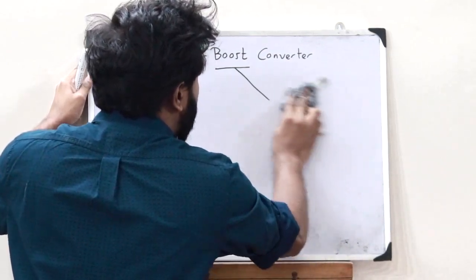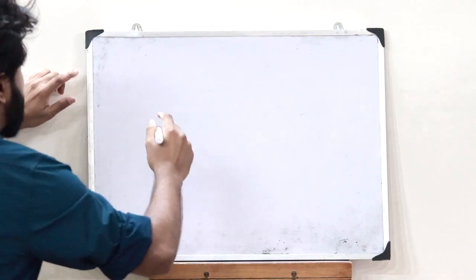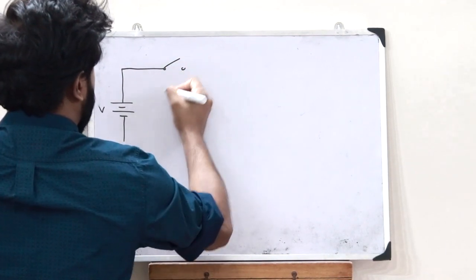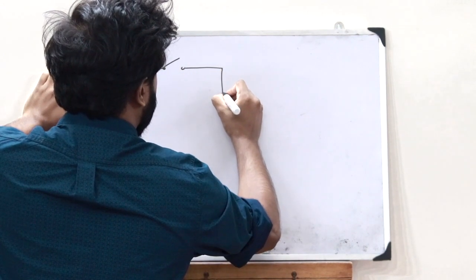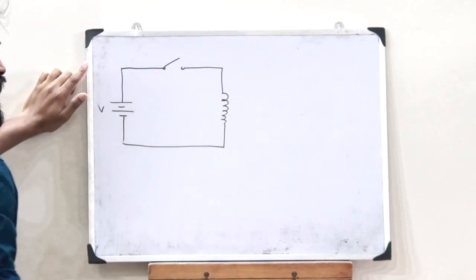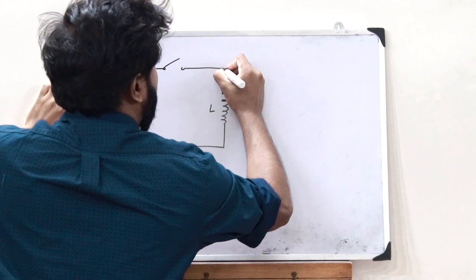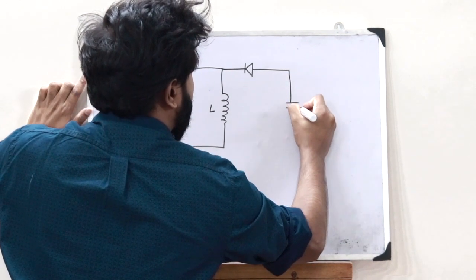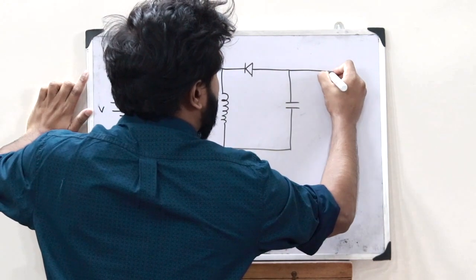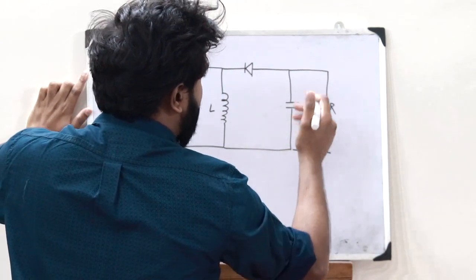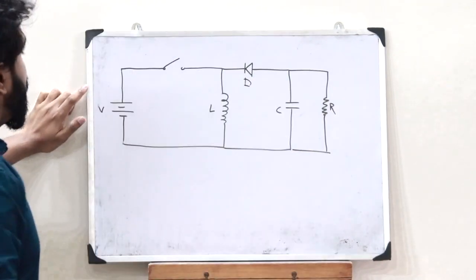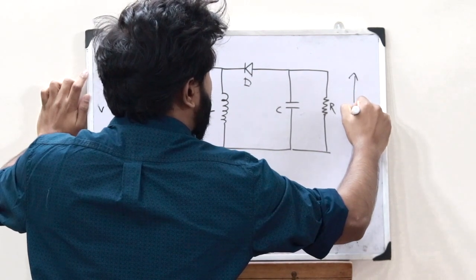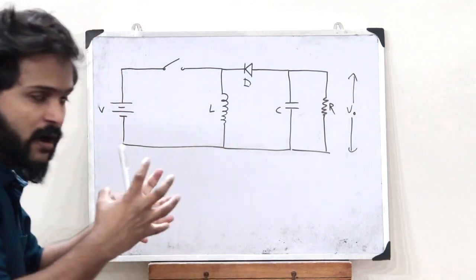Let us construct the circuit diagram of a buck boost converter. We have a source voltage V connected to a switch S, which is then connected to an inductor with inductance L. A diode D is connected here, which leads to a capacitor C, and across this capacitor a load resistance R is connected. The input voltage is V and the output voltage is obtained across this resistor R. This is the basic diagram of a buck boost converter.